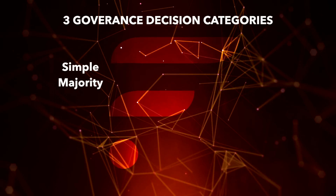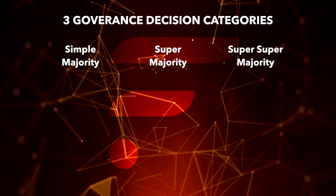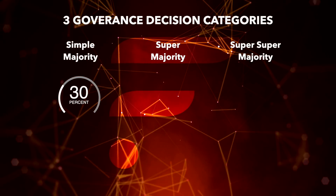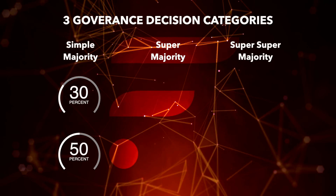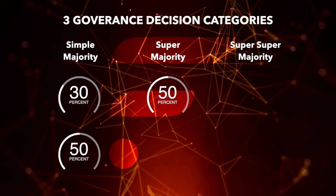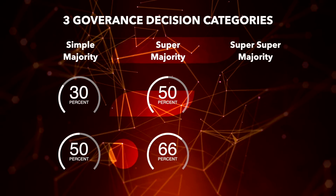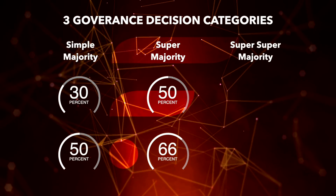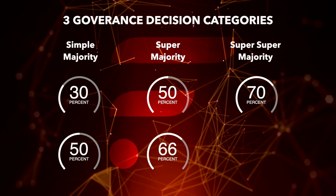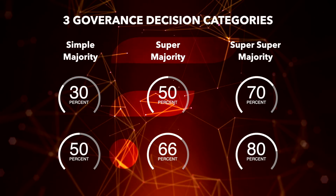We have the simple majority, the super majority, and the super super majority. Decisions in the simple majority category require at least 30% of Spark holders to vote, and of those who voted, more than 50% should be in favour of the change. Decisions in the super majority category require at least 50% of Spark holders to vote, and of those who voted, more than 66% should be in favour of the change. Finally, decisions in the super super majority category require at least 70% of Spark holders to vote, and of those who voted, more than 80% should be in favour of this change.